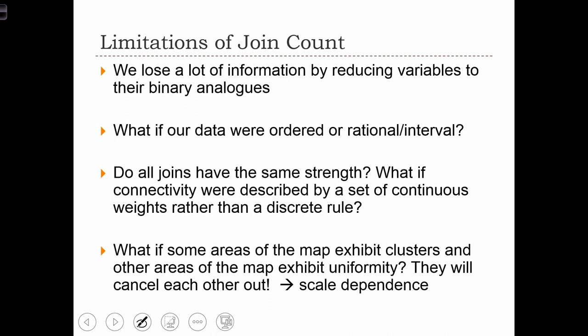We should briefly cover some of the limitations of the joint count statistic. First of all, we need to realize that when reducing data from a rationally measured variable, like GDP or the obesity rate, into some sort of categorization — in particular a binary categorization — we are losing a lot of information.